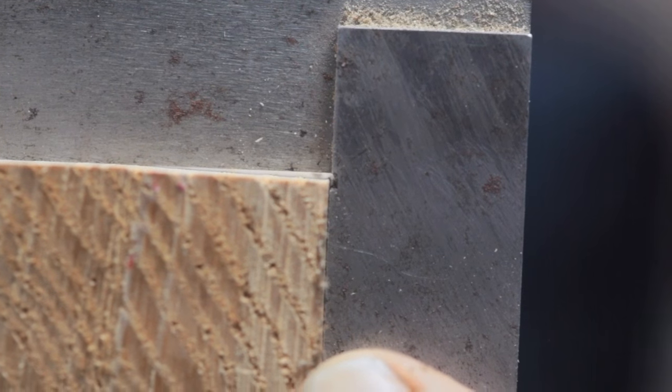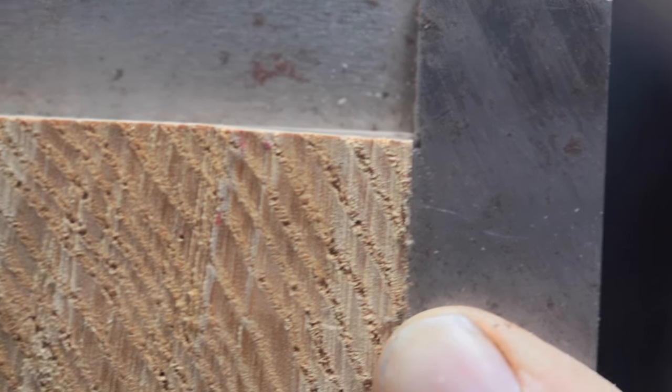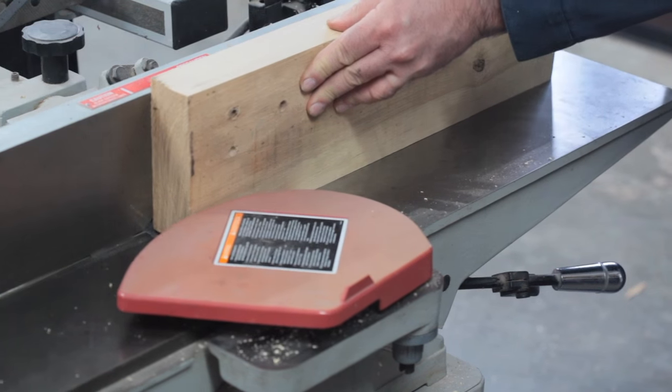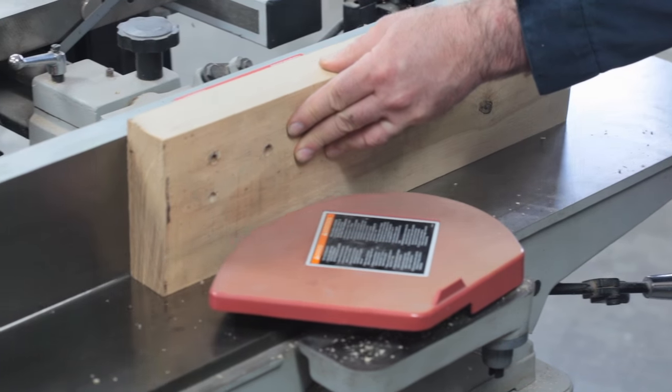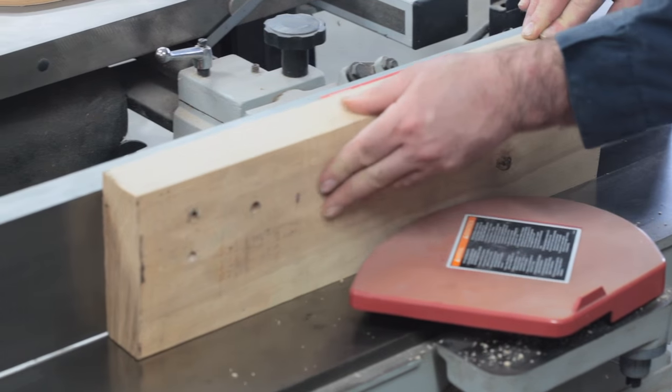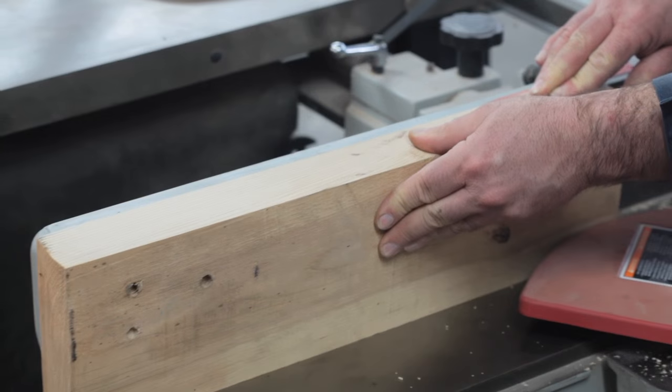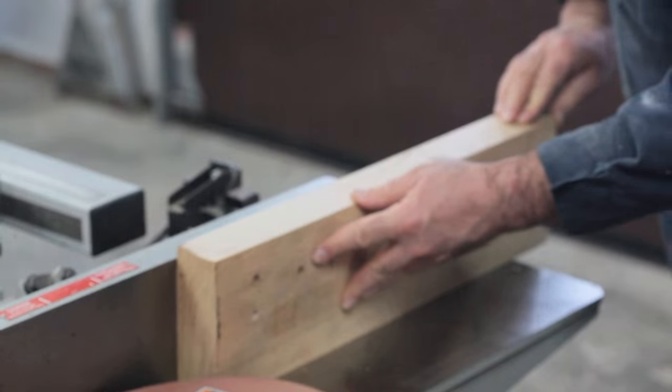Looks like a little thing but it's pretty important that we get this done right. So another couple of passes and this problem will be solved. So it's the same operation as before. Slow and steady with the wood pushed tight against the fence and two or three more passes will take care of it.